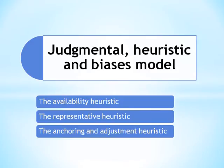The Anchoring and Adjustment Heuristic. When a decision-maker makes a decision by anchoring the process to an initial value and then adjusts this value to finally come to a conclusion, he or she is said to resort to the anchoring and adjustment heuristic. For example, an employee may be rated as good in a performance appraisal for the current year based on good performance in the past five years. These biases make this model a complex behavioral approach to decision-making.